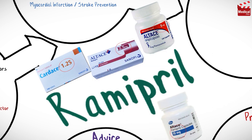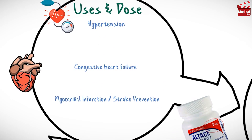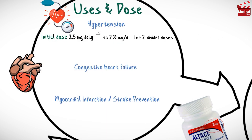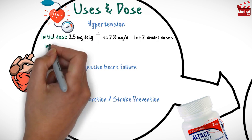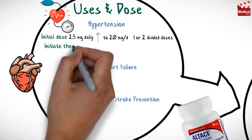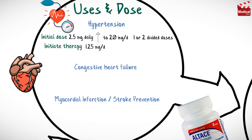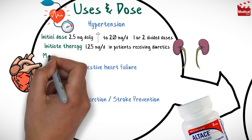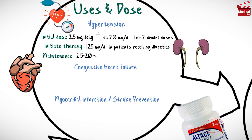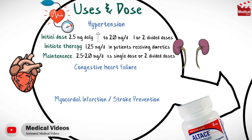The usual initial dose of remipril for hypertension is 2.5 milligrams once daily, which may be increased up to 20 milligrams per day in one or two divided doses. Therapy is initiated at 1.25 milligrams per day in patients receiving diuretics.